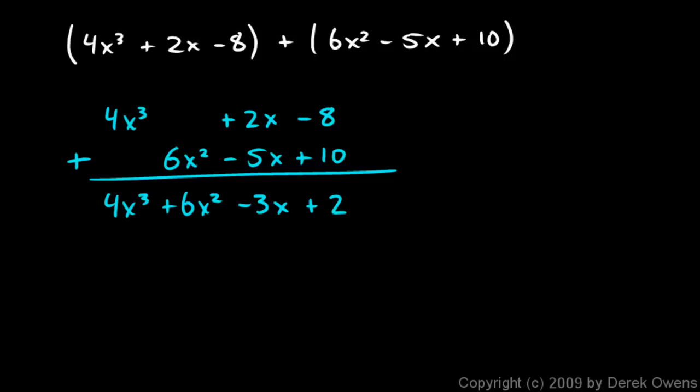So personally, I prefer the horizontal method. And when I'm adding the polynomials horizontally, I use my little underlining of the different terms to keep track of the like terms and which ones I've added.